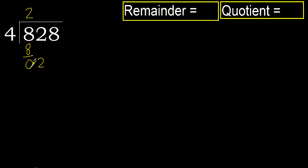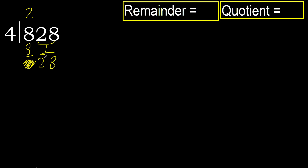Next, bring down. 2 is less than 4, therefore next. There are 2 numbers, therefore complete — always complete with 0. Complete because here there are 2 numbers.